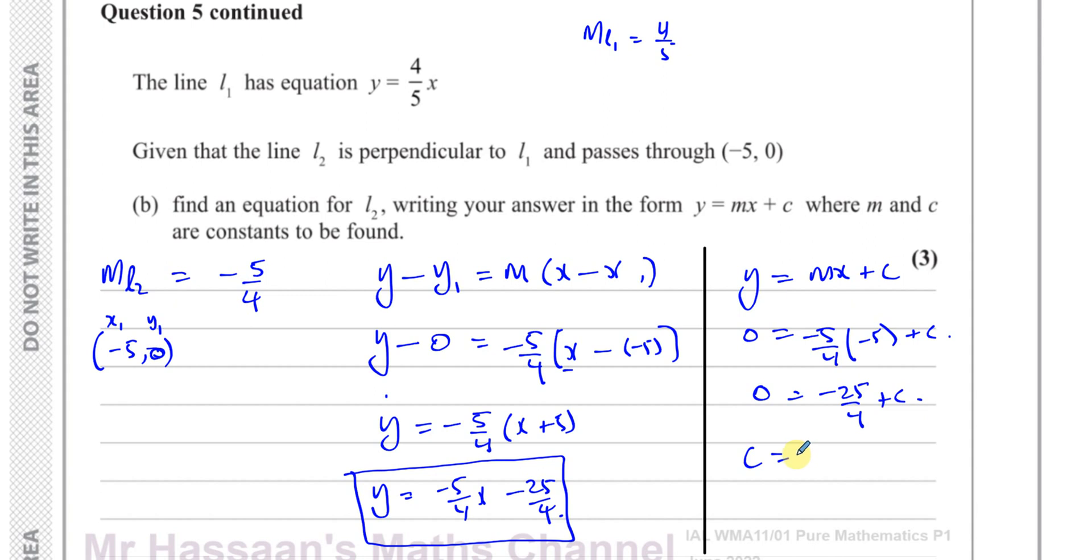So C is equal to... sorry, almost made a silly mistake. That's positive 25 over 4, of course, because minus times minus is positive. So C is negative 25 over 4. Therefore we can say Y equals MX, so M is minus 5 over 4 times X, plus C, which is minus 25 over 4. Same answer.